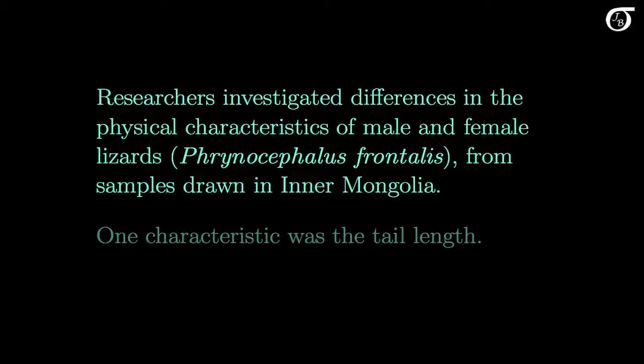Researchers investigated differences in the physical characteristics of male and female lizards of the species Phrenocephalus frontalis from samples drawn in Inner Mongolia. This is a small lizard found in arid regions in Asia. The researchers sampled 44 adult females and 22 adult males of this species by capturing them by hand or with a noose, and took several measurements of physical characteristics. One characteristic was the tail length, and that's what we'll look at in this video.